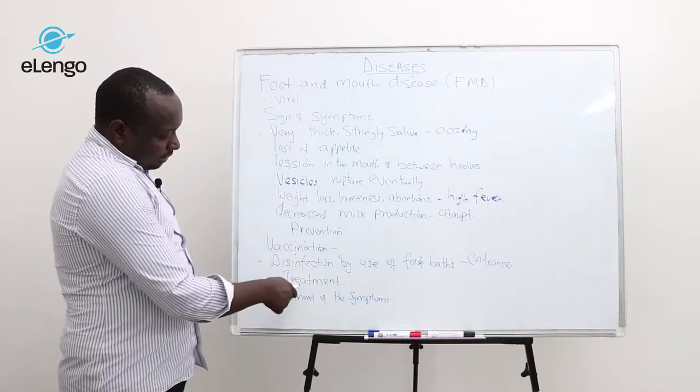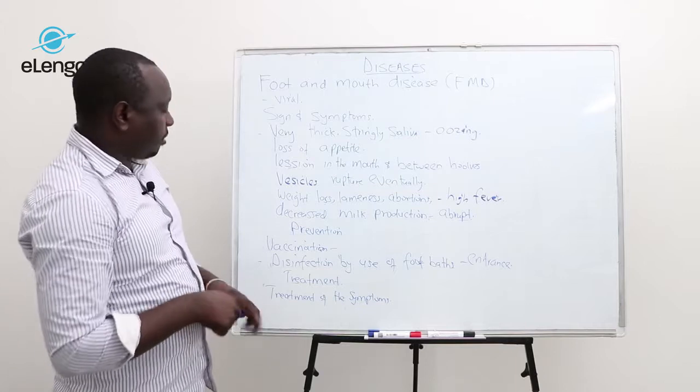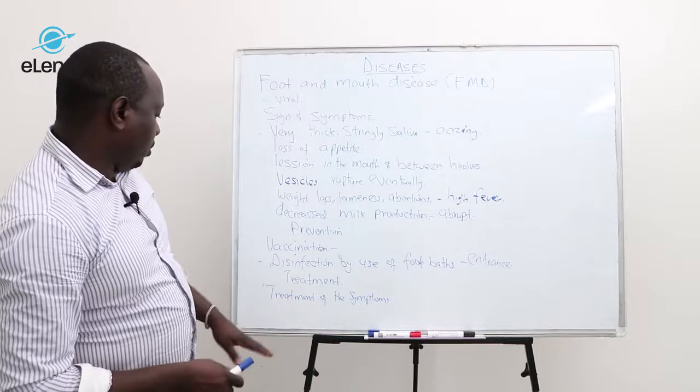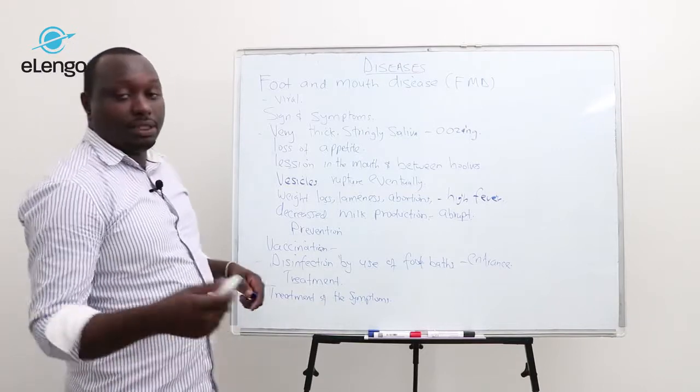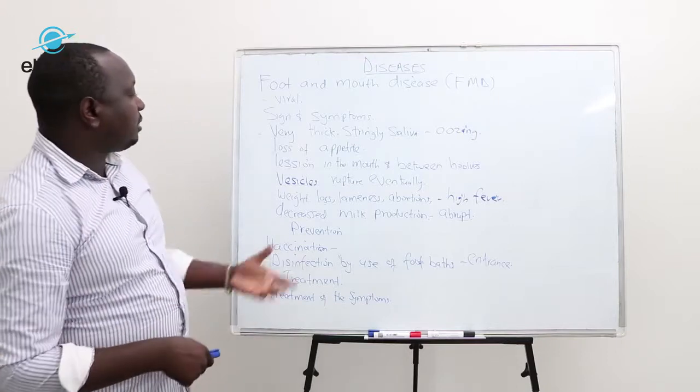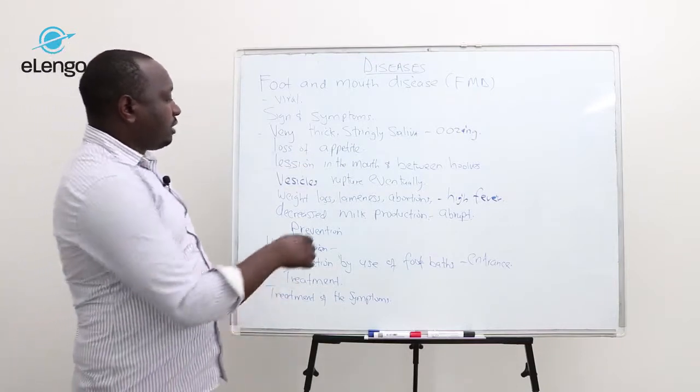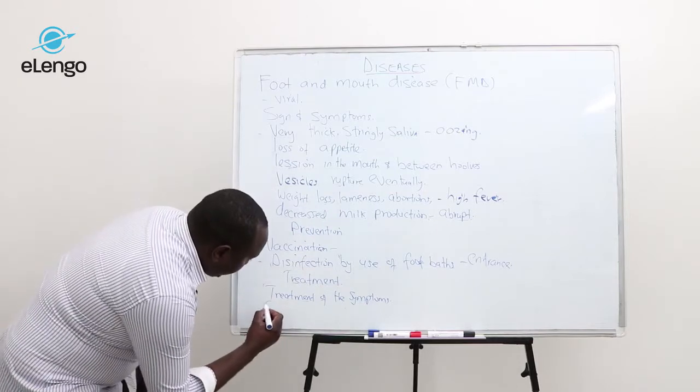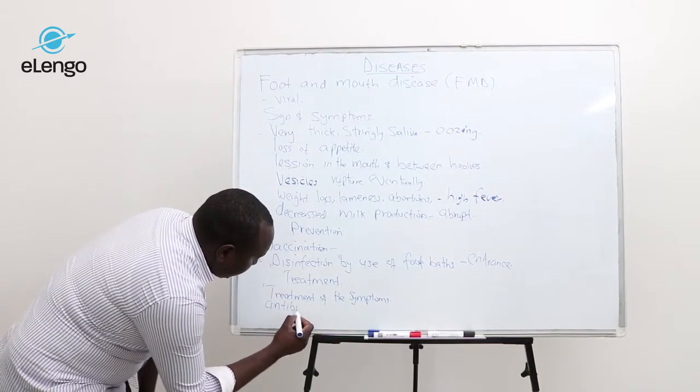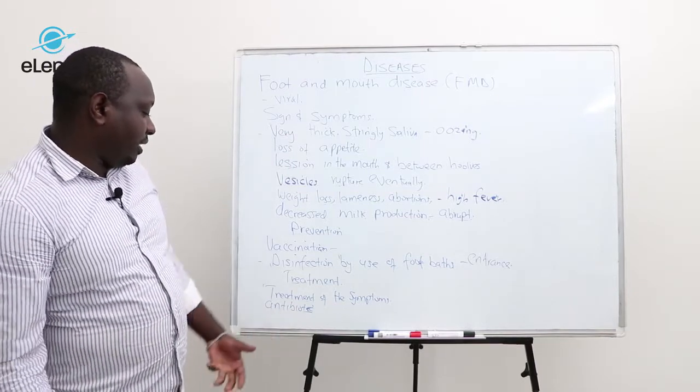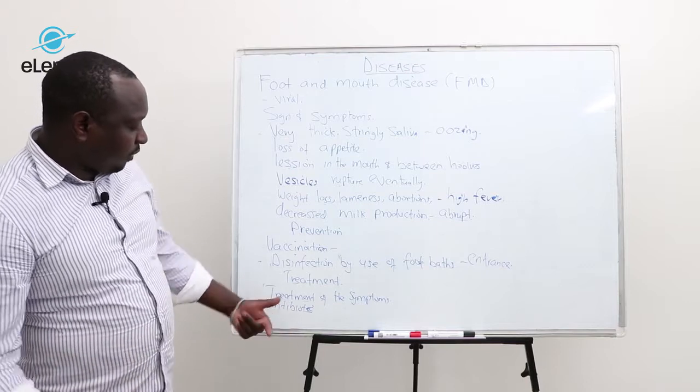For treatment, most viral diseases don't have a treatment like antibiotics. So what we do is treat the symptoms. For example, you treat the wounds using antibiotics to ensure they don't act as a secondary infection or route for disease to enter the animal's body system.